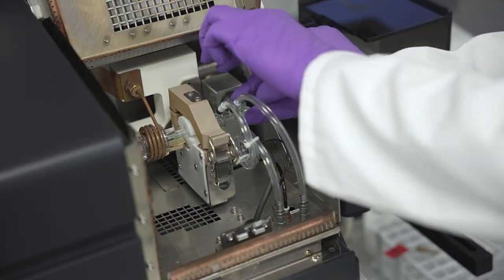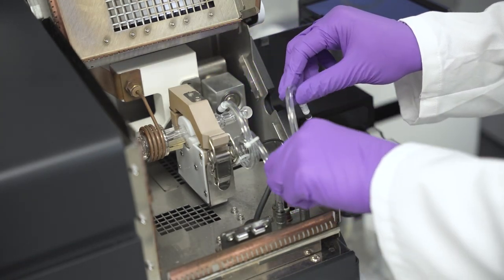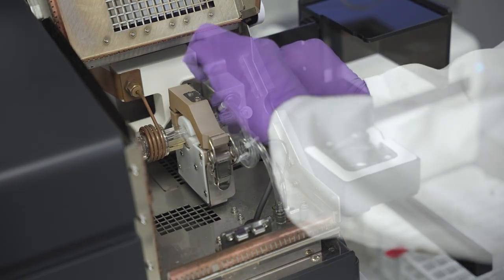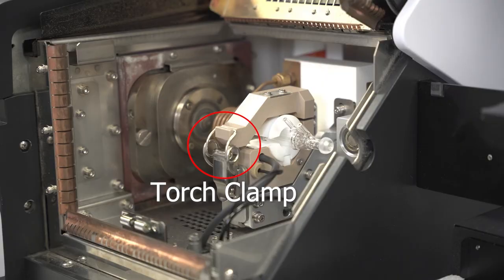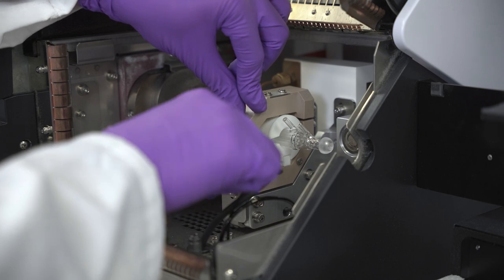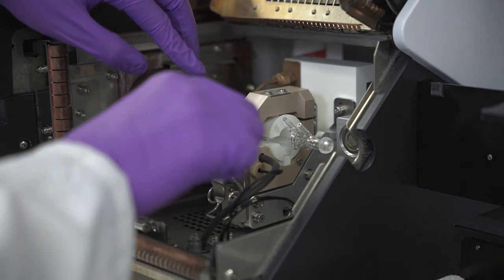The last glass piece is the torch. Remove the auxiliary gas and plasma gas tubing from the torch and the ports in the plasma stand. Unclip and open the torch clamp. Slide the torch assembly laterally to remove it from the RF coil.